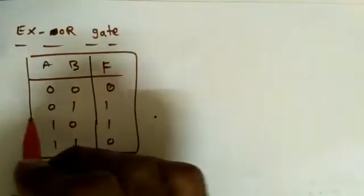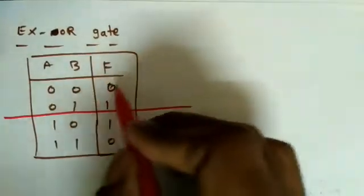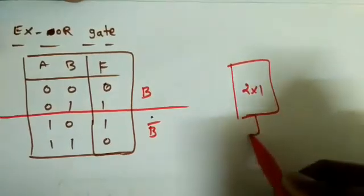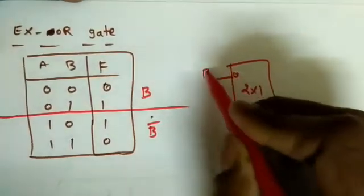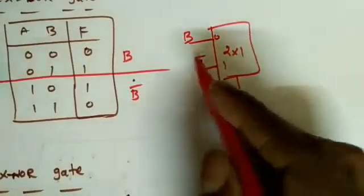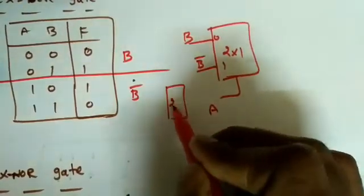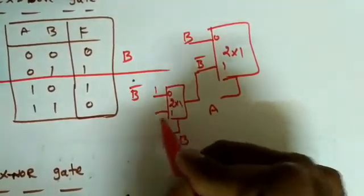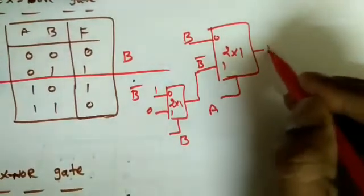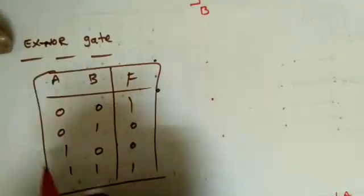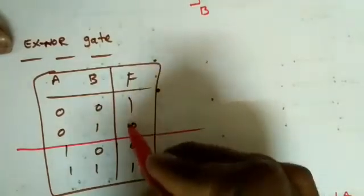For the XOR gate using a 2×1 MUX with A as select line: when A=0, F follows B so data input is B; when A=1, F follows the opposite of B so data input is B'. If complements are not available, add one more 2×1 MUX: give B as input with I0=1 and I1=0 to produce B-complement. The function implemented is F = A·B' + A'·B.